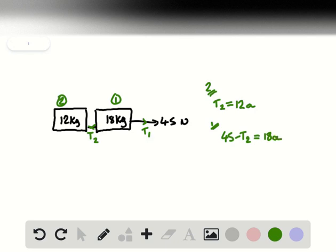So this brings us to the first quantity we can determine, because we could easily rearrange to substitute T2 as we have it here into equation one, leaving us with 45 minus 12a is equal to 18a, which is easily remedied to 45 is equal to 30a.